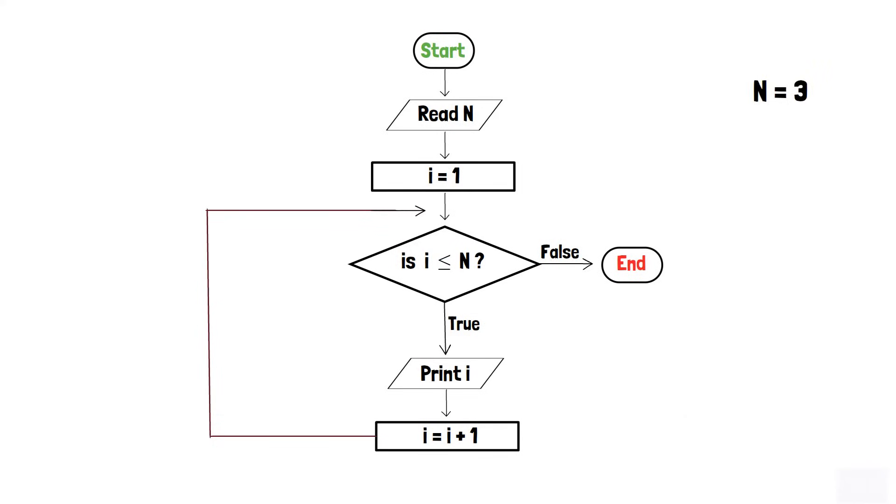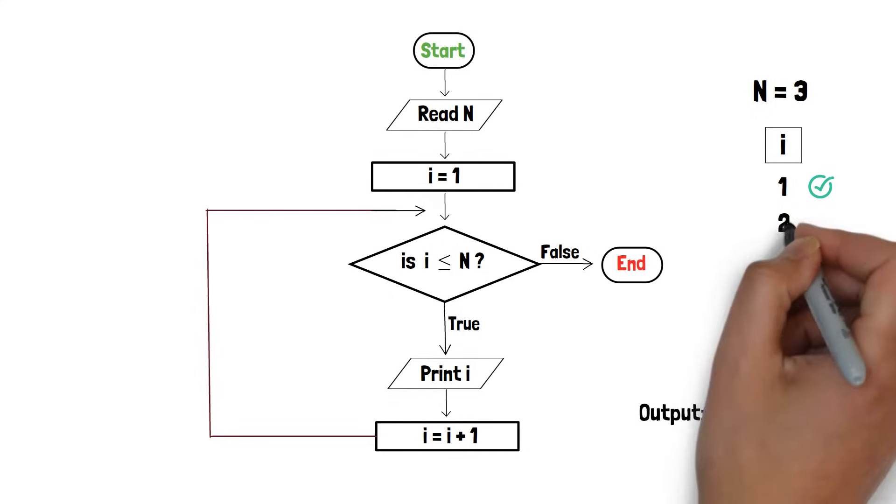Since i equals 1, the condition in the decision box is true. Thus, 1 is printed and i is incremented to 2.